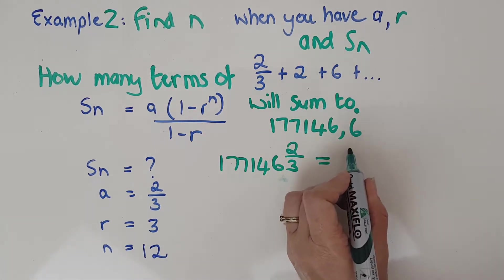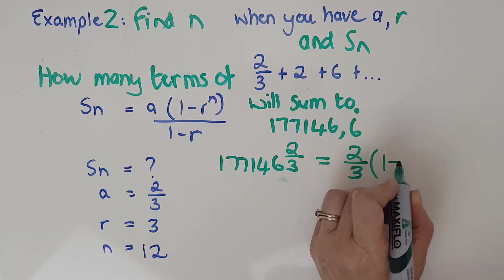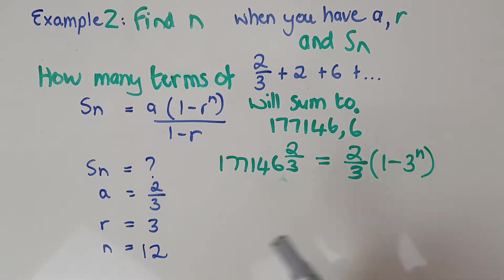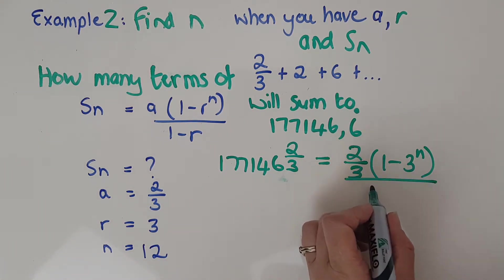Equals my first term, which I've got, 2 thirds, times 1 minus r is 3, so it's 3 to the n. This is perhaps going to be a bit tricky to solve because it's exponential stuff, over the 1 minus 3.